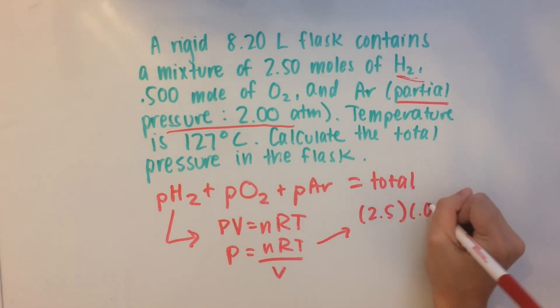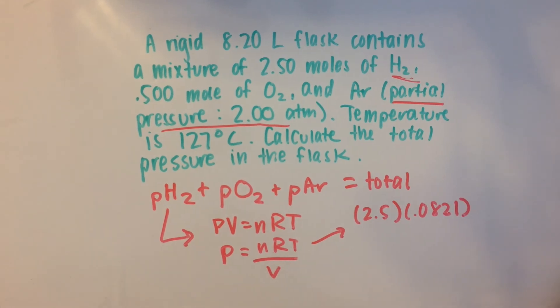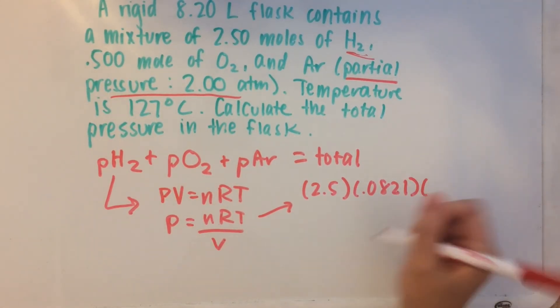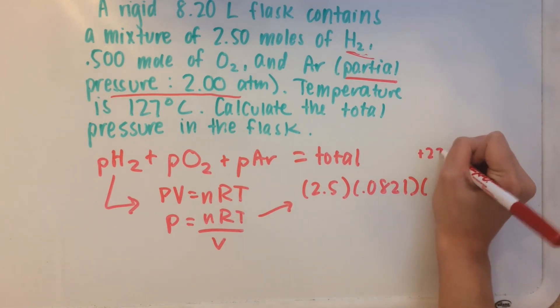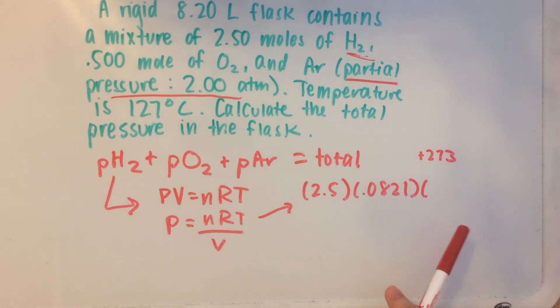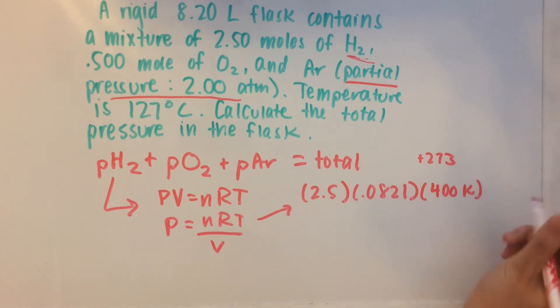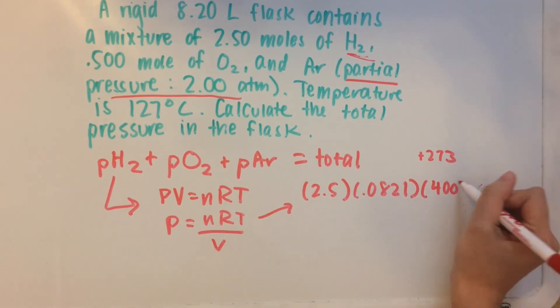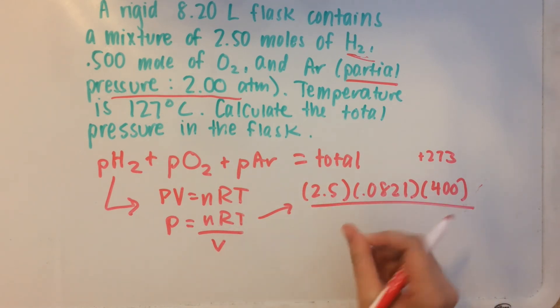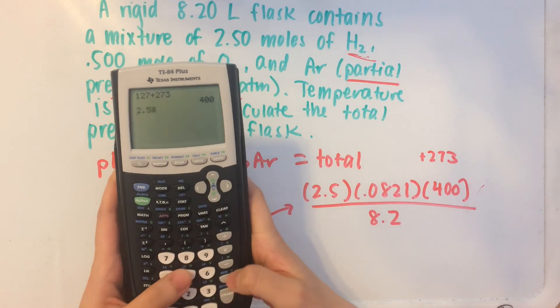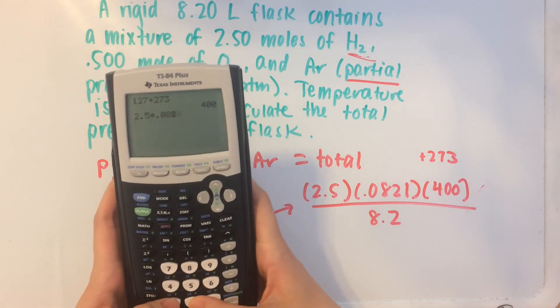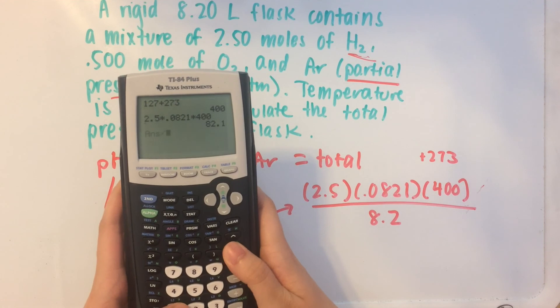R is 0.0821 when we're dealing with atmospheres. Temperature is 127 plus 273 because remember we need to convert that to Kelvins. That will give us 400 Kelvins. And divide that by volume, which is 8.2 liters.